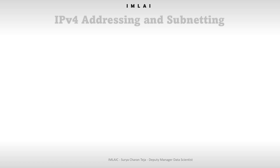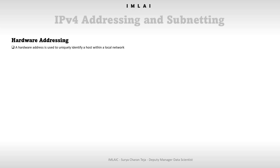Now let's look into addressing and subnetting. There are two types of addressing. The first one is hardware addressing. A hardware address is used to uniquely identify a host within a local network. Hardware addressing is a function of the data link layer of the OSI model — that is layer 2.